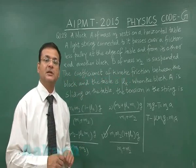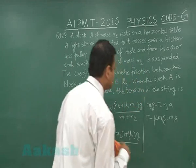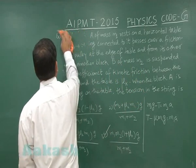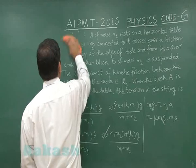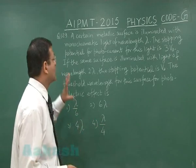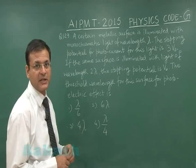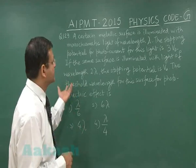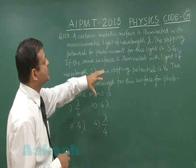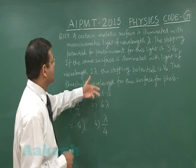Now let us switch over to question number 129. This question is based on the photoelectric effect, and you will have to use Einstein's photoelectric expression. They are talking in terms of stopping potential, incident wavelength, and threshold wavelength.